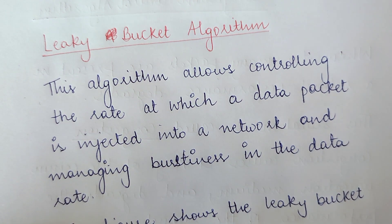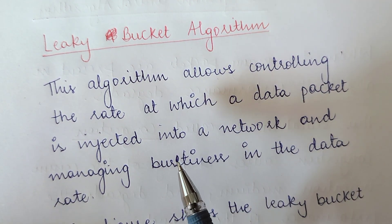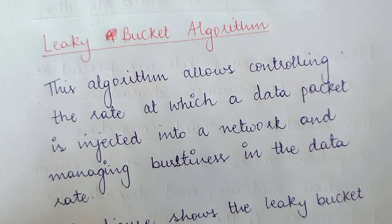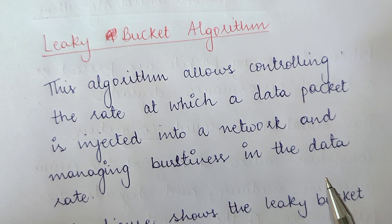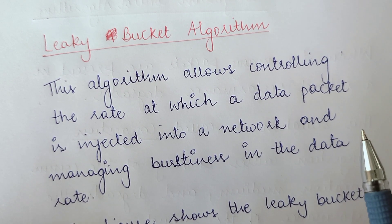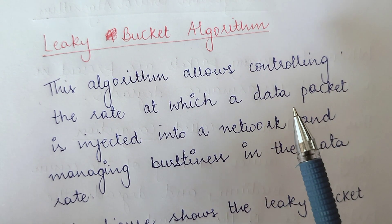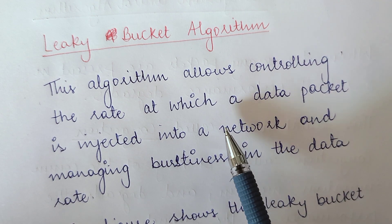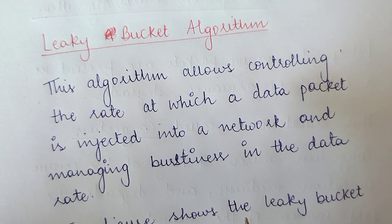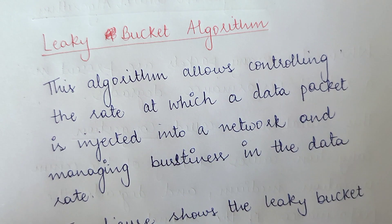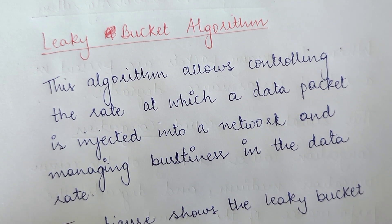The leaky bucket algorithm controls the rate at which data packets are injected into the network. Congestion occurs because the number of packets injected in the network exceeds the capacity of the transmission medium. So if you control the injection rate, this will to a large extent avoid congestion. The algorithm also manages burstiness in the data rate — bursty data, where a lot of data is injected all at once, leads to congestion. If data arrives at a constant rate rather than in bursts, congestion can be avoided.